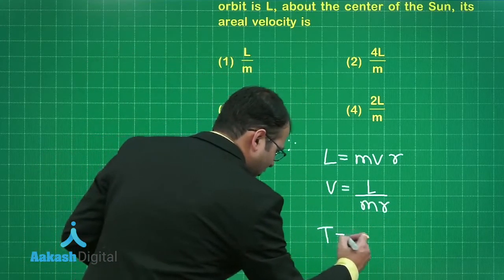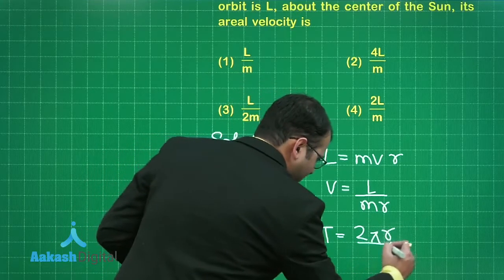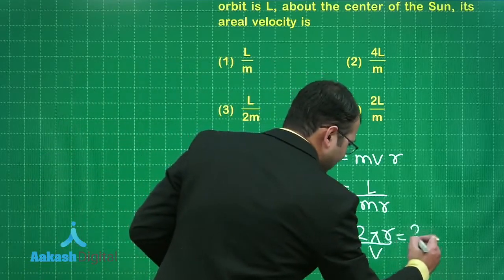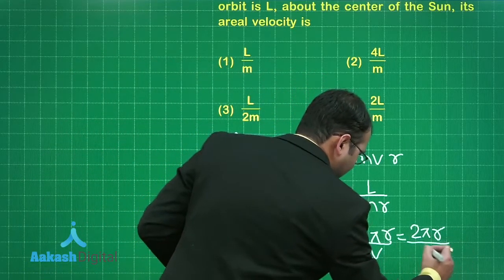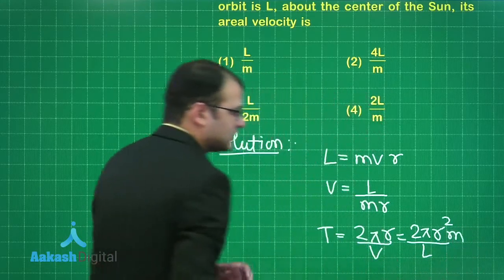In a circular motion time interval or time period would be equal to distance that is 2 pi R divided by speed. From here if you say it would be 2 pi R divided by L this one and M and R will go upwards.